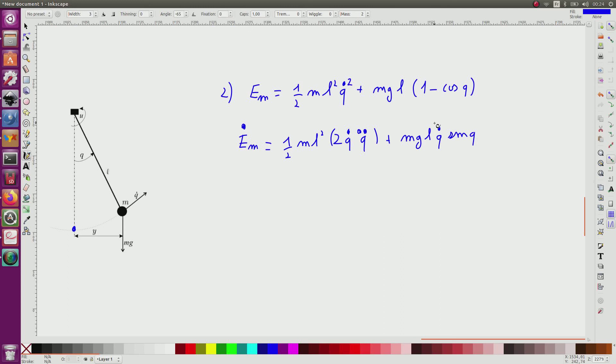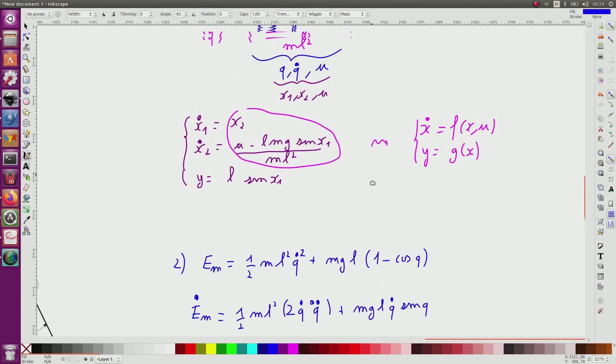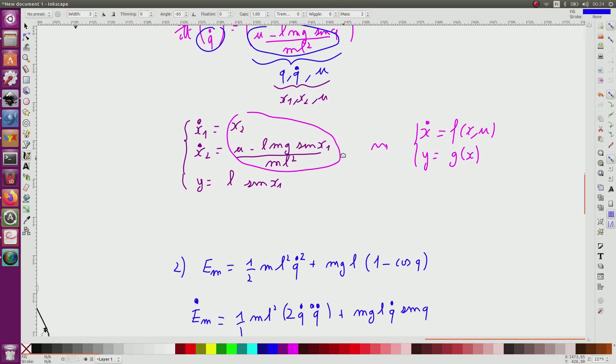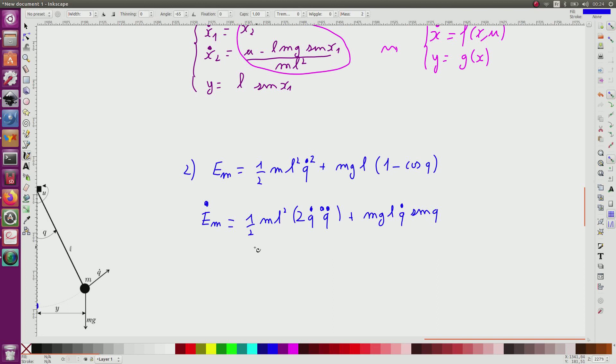Now, from my state equation, I know that Q dot dot is given here. So I have an expression here, and I know that in my situation, U equals zero. So from this, I know that the Q here and here will simplify, and I will have ML squared multiplied by Q dot, and as seen previously, Q dot dot is equal to MgL Q dot sine of Q, and here plus MgL Q dot sine of Q.